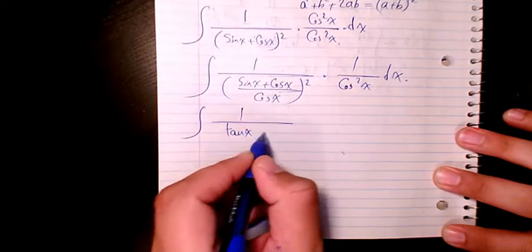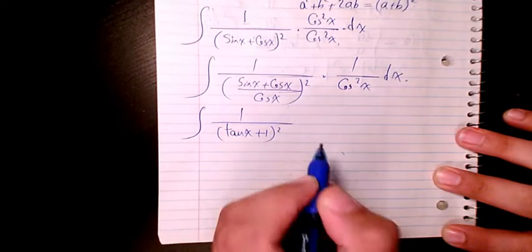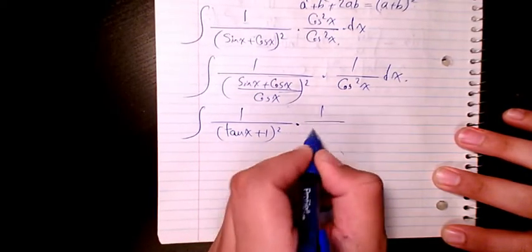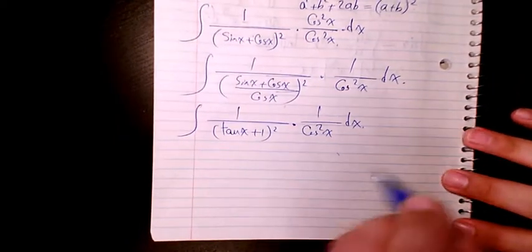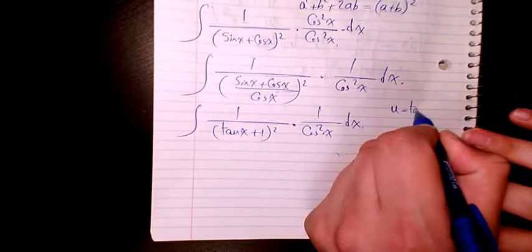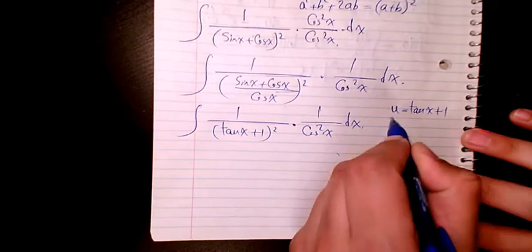So now if I consider u as tan x plus 1, du will be 1 plus tan squared x, or 1 over cosine squared x dx.